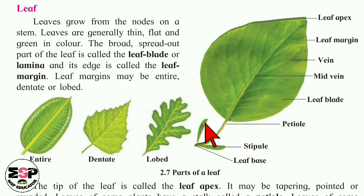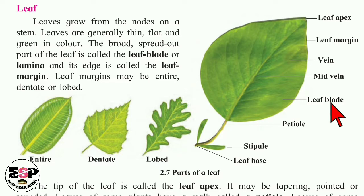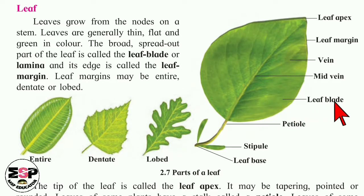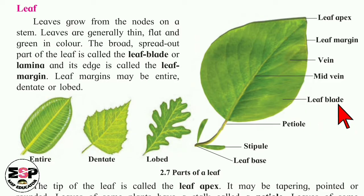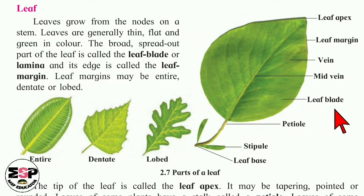This is a figure of a leaf and labels are given to each and every part. One by one, we are going to study about the parts of the leaf. The broad and spread-out part of a leaf is called a leaf blade or lamina. And its edge is called a leaf margin.